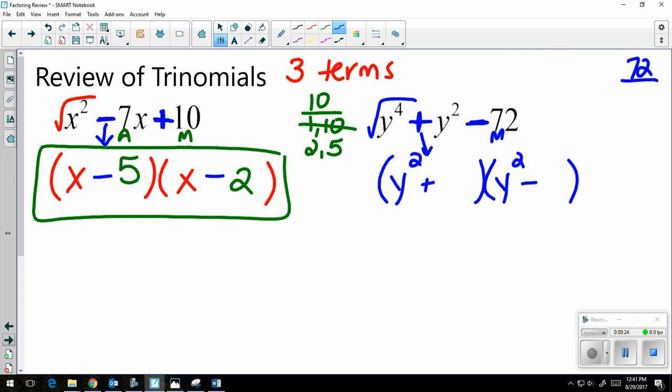You can put 72 into the y equals. So if you go to y equals and do 72 divided by x, it will give you the factors of 72. So I have 1 and 72. I have 2 and 36. 3 and 24.